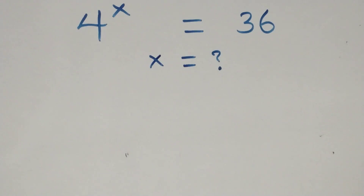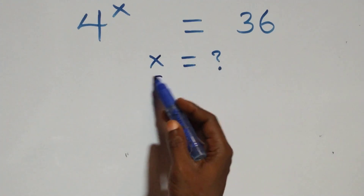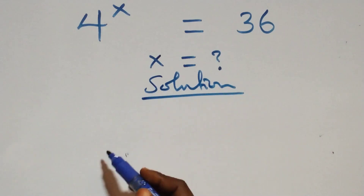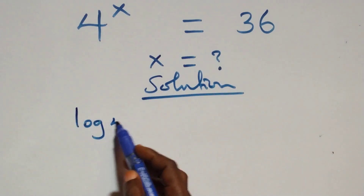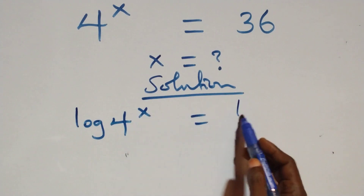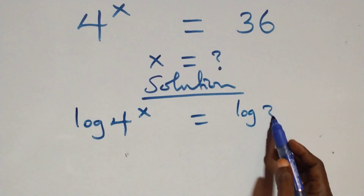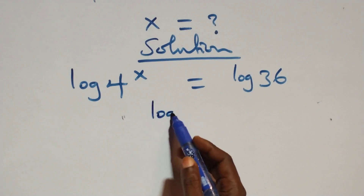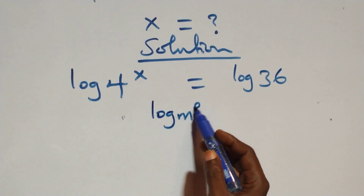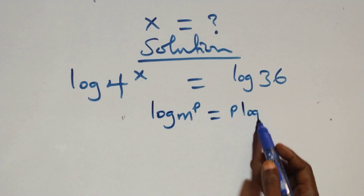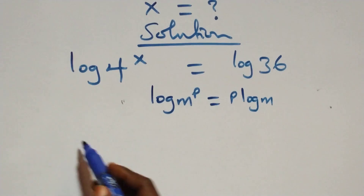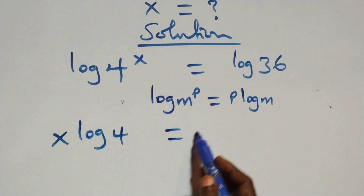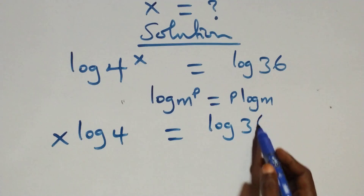Welcome. Let's solve this exponential equation. We take the log on both sides: log(4^x) = log(36). We apply the power rule of logarithms, where log(m^p) = p·log(m), so this becomes x·log4 = log36.